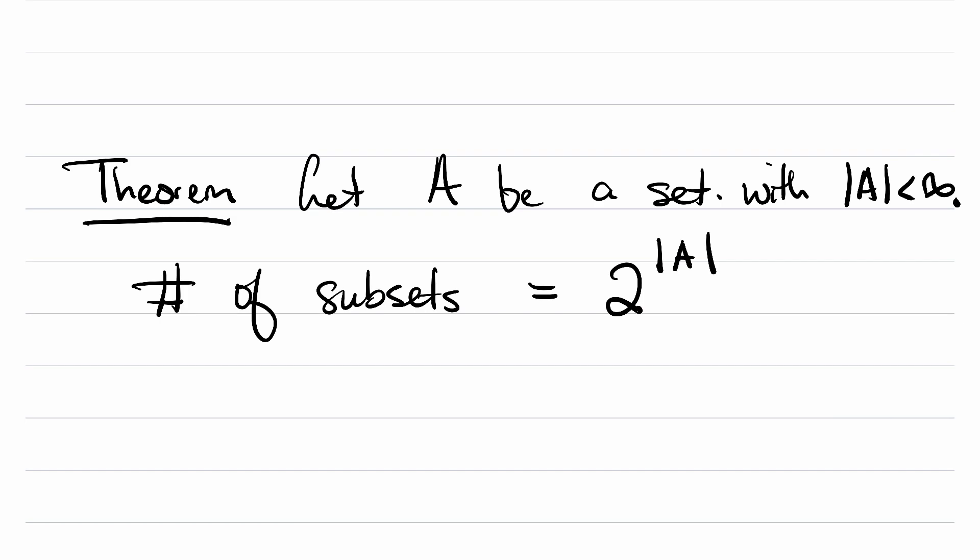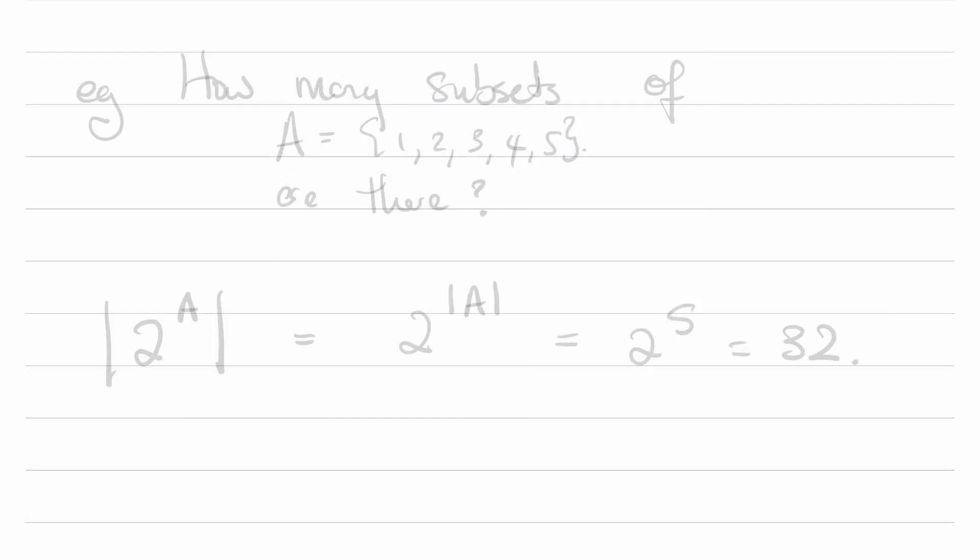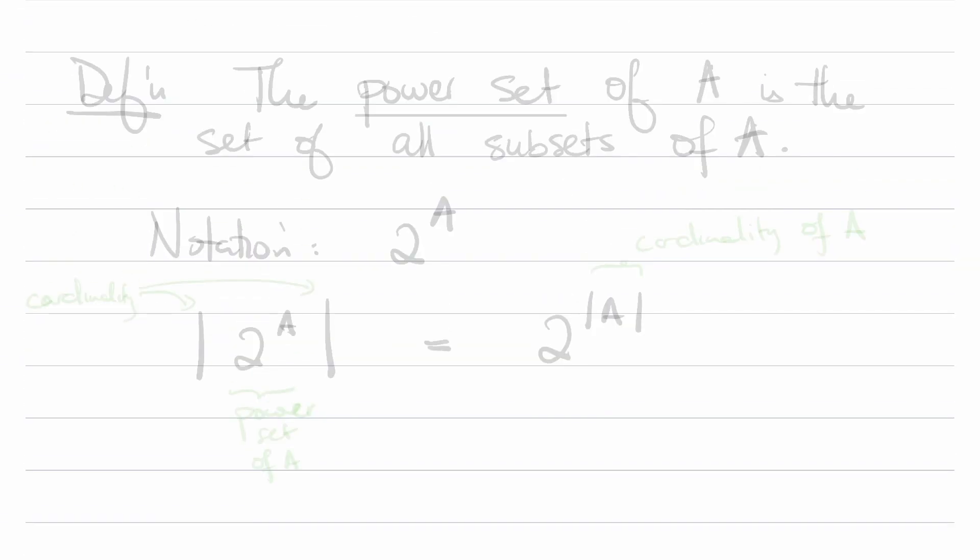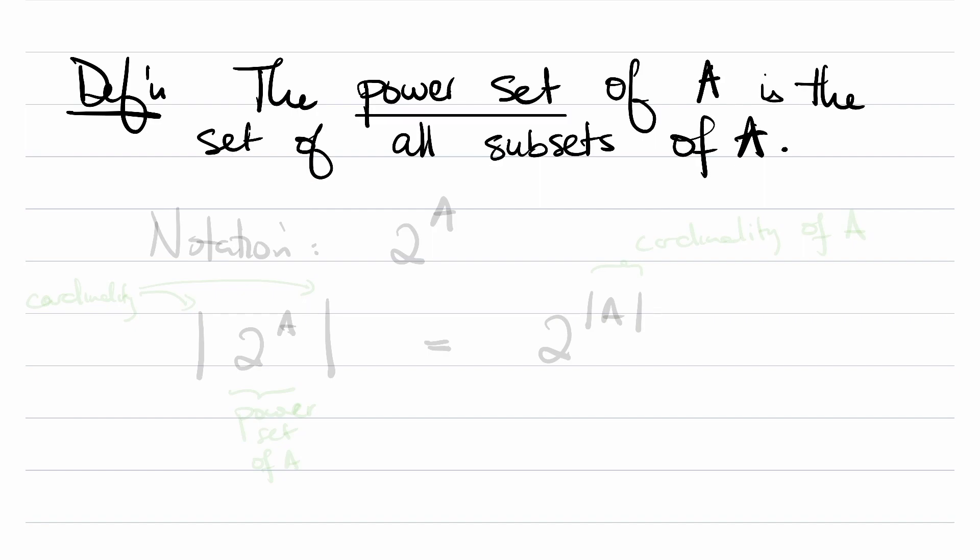Before we do a quick example of this, I do want to introduce a notion of the power set. This is what we're secretly exploring. Definition: The power set of A is the set of all subsets of A. The notation for this is 2 to the A, which normally would not make sense because what is 2 raised to a set? But we're introducing this as notation that makes sense. This is representing the power set of A. And what that theorem that we just talked about says is that the cardinality of the power set of A is going to be 2 raised to the cardinality of A.